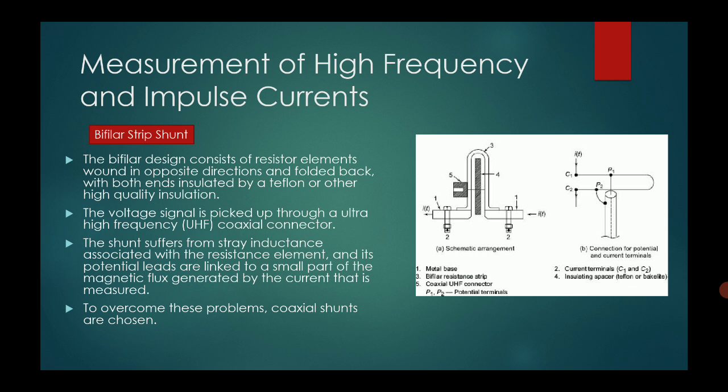For measurement of high frequency impulse currents, we can also use bifilar strip shunts. The bifilar design consists of resistor elements wound in opposite directions and folded back, with both ends insulated by Teflon or other high quality insulation. The voltage signal is picked up through UHF coaxial connectors. The shunt suffers from stray inductance associated with the resistance element and its potential leads, which are linked to a small part of the magnetic flux generated by the current being measured. To overcome these problems, coaxial shunts are chosen.